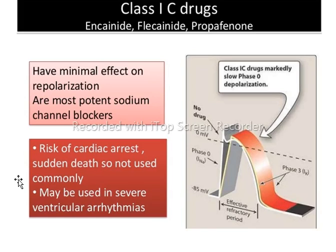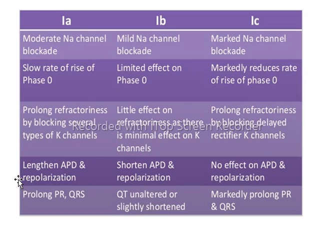Class IC drugs include encainide, flecainide, and propafenone. They have minimal effect on repolarization and are the most potent sodium channel blockers compared to Class IA and IB. However, due to risk of cardiac arrest and sudden death they are not commonly used — this is why Class IA and IB are preferred. They are used in severe ventricular arrhythmia. Comparatively: Class IA are moderate sodium channel blockers, Class IB are mild, and Class IC are the most potent.